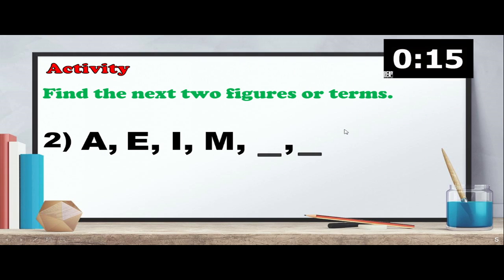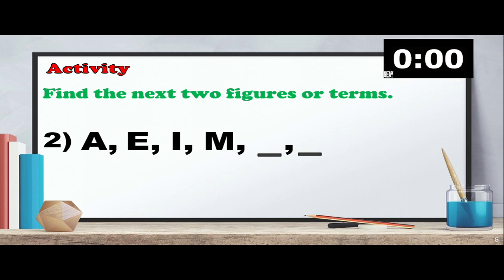For number 2, we have a sequence of letters: A, E, I, M, blank, blank. What would be the next two terms? The correct answer is Q and U, because A, B, C, D, E — skip by four letters.